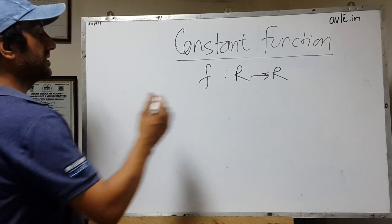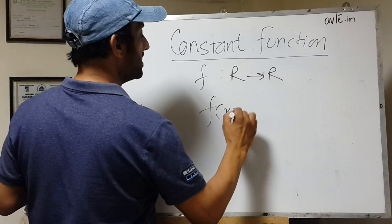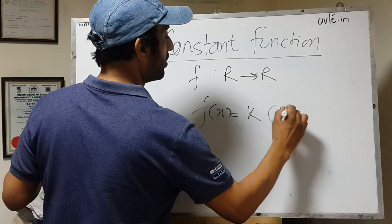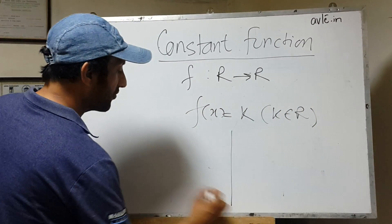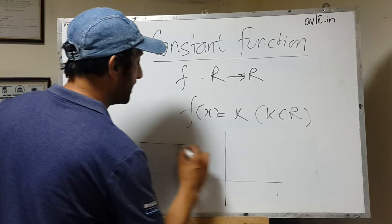Therefore, we can generalize it with f(x) = k where k belongs to any real number. So the graph of a constant function will always be like this.